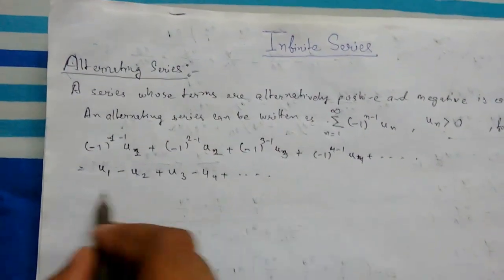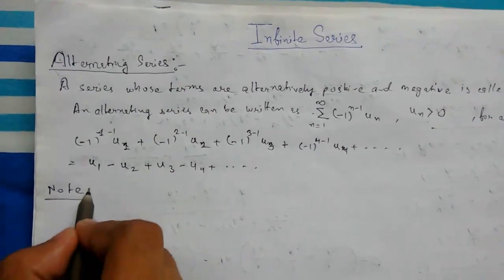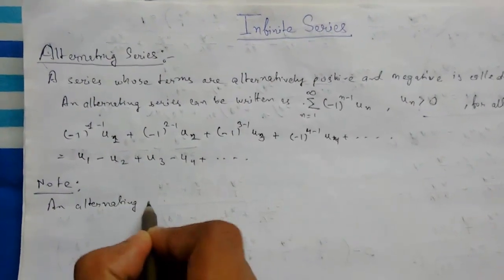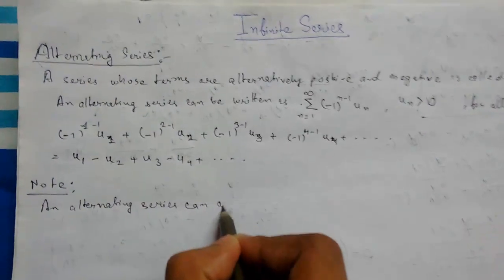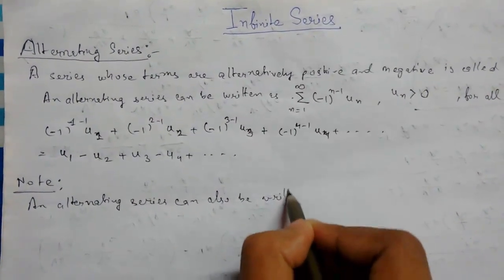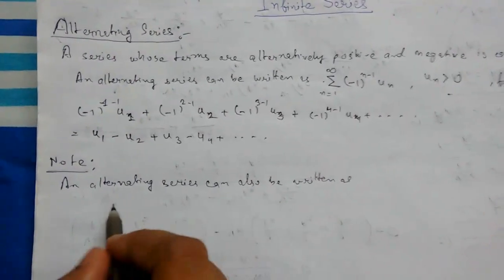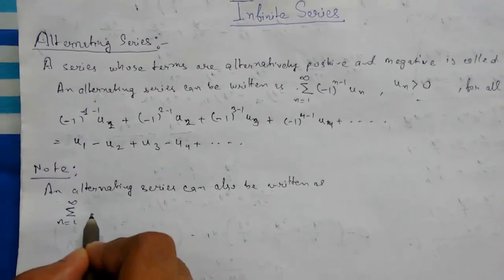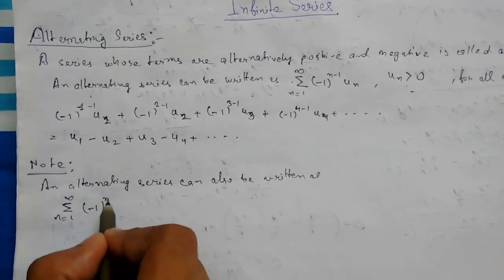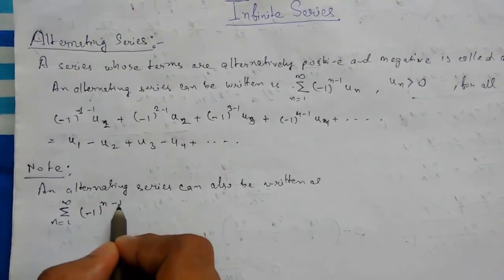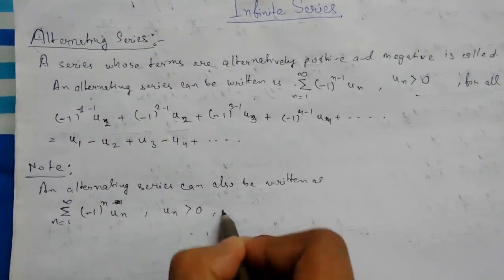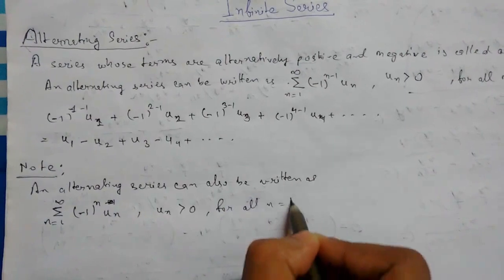Note: An alternating series can also be written as summation n from 1 to infinity of minus 1 whole to the power n, times u_n, where u_n is greater than 0 for all n = 1, 2, 3. Let me show how this looks.